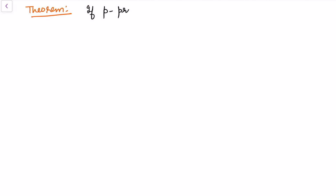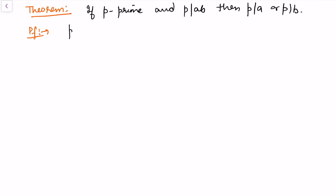The theorem says: if p is prime and p divides ab, then p must divide a or p must divide b. In the proof, what is given is that p is prime and p divides ab. We first consider the case that p divides a — if so, we do not need to go further.